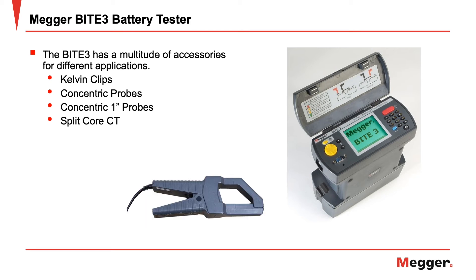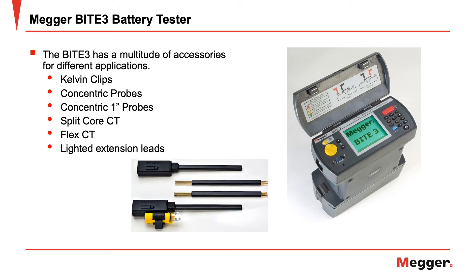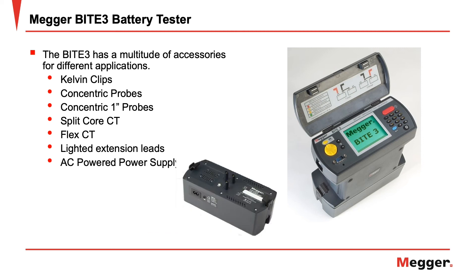The split core CT allows the Byte 3 to take measurements on parallel strings without the need to segment the strings, and also allows use of the optional Byte 2 transmitter for testing large-capacity flooded batteries. The Flex CT is a battery-operated flexible current clamp that can be used in place of the split core CT, ideal for strings with large cables or bus bars. Lighted extension probes allow for easy access in deep cabinets common in UPS applications. The AC power supply eliminates the need for the Byte 3 battery, useful where AC power is readily available or in benchtop applications.